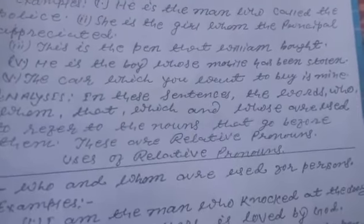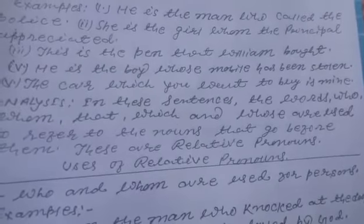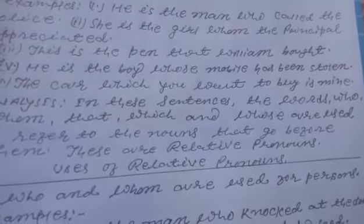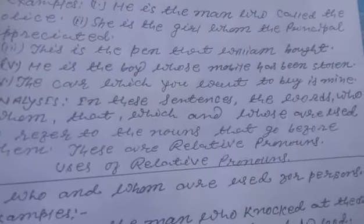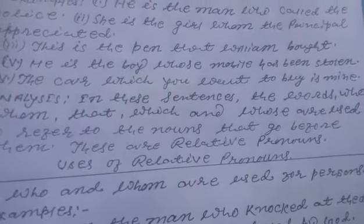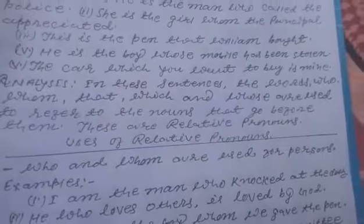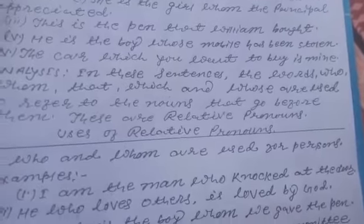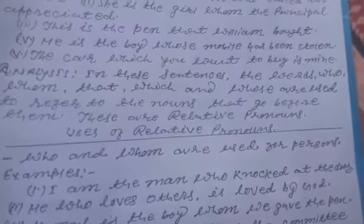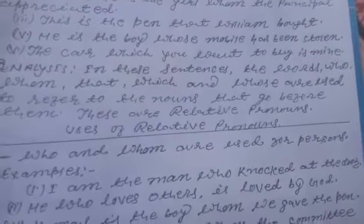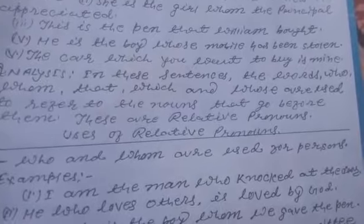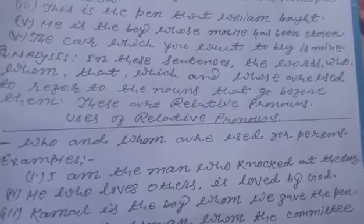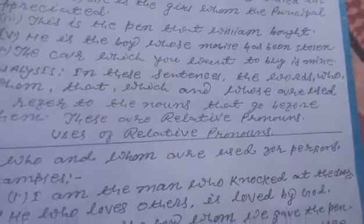The car which you want to buy is mine. In these sentences, the words used are: who, whom, that, which, and whose. These are used to refer to the nouns — this is a noun which refers back to the preceding noun. This is why they are called relative pronouns.